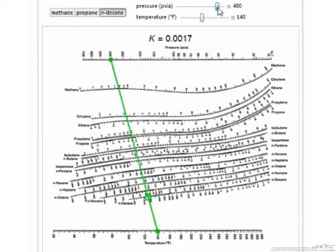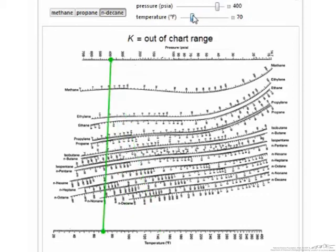For n-decane, at reasonable temperatures and pressures, the material is more likely to be found in the liquid phase. Therefore, the k value will be less than 1, and often much less than 1.